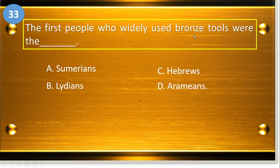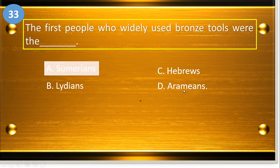Number thirty-three: the first people who widely used bronze tools were the blank. A, Sumerians; B, Lydians; C, Hebrews; and D, Amarians. The answer is letter A, Sumerians.